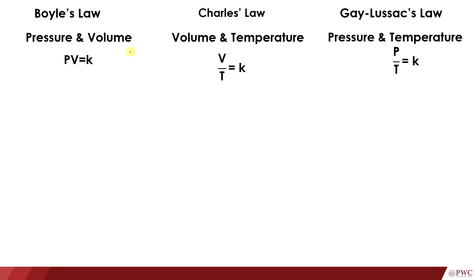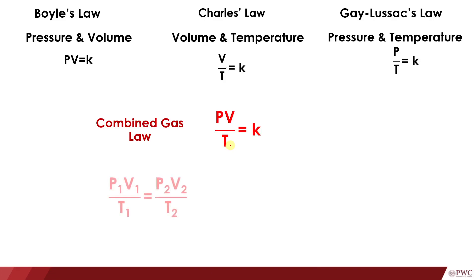We can combine these three different equations into one combined equation — the combined gas law. This considers the relationship of pressure and volume, volume over temperature, and pressure over temperature. It states that volume is inversely proportional to pressure and directly proportional to absolute temperature. Since this equals a constant, initial P·V/T equals final P·V/T, from which we can derive our working equation.